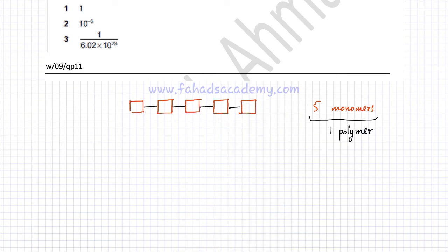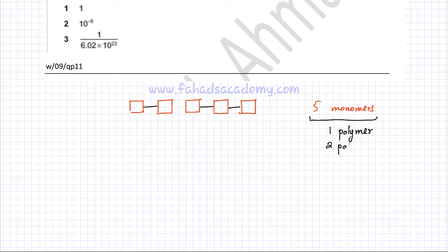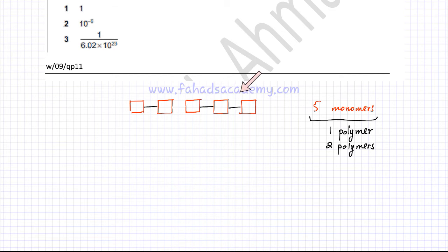What could also happen is that not all five monomers join together. Two could join together and three could join together — they join in groups. Three of the monomers join together and two of the monomers join together. These three combine to form one molecule, and these two combine to form another molecule, giving two polymers. The key point is that if you have five monomers, you can't get five polymers. The number of polymers is always less than five because when they join together, the number of molecules decreases.